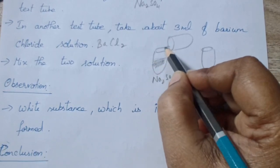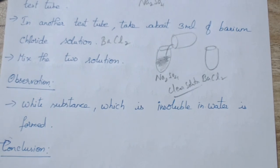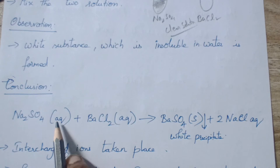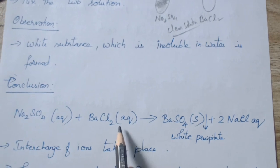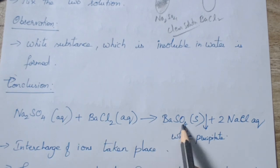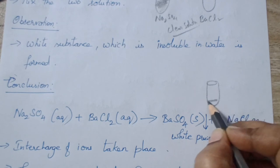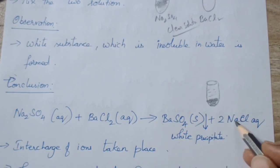The white substance is formed — it is insoluble in water. The colorless solution becomes white upon mixing. What is your conclusion? The sodium sulfate is aqueous — 'aq' means solution in water. Sodium sulfate (aq) plus barium chloride (aq) — barium chloride is also aqueous because it is dissolved in water — gives barium sulfate, which is solid and insoluble in water. It gives a white precipitate. Barium sulfate settles down, and you will have a clear solution above it — that is your NaCl, sodium chloride.